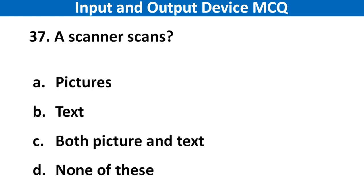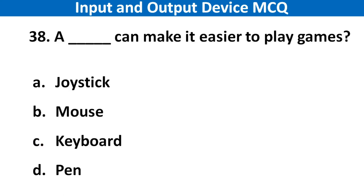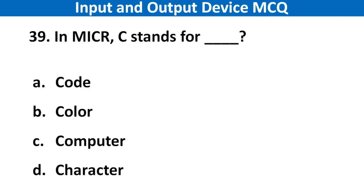Next question: A scanner scans. Right answer is option B: Both pictures and text. Next question: A what can make it easier to play games? Right answer is option A: Joystick. Next question: In MICR, what does C stand for? Right answer is option D: Character.